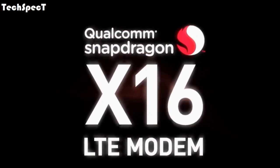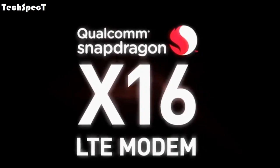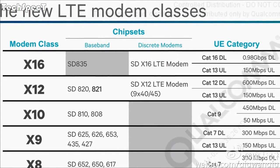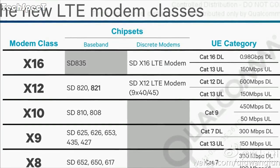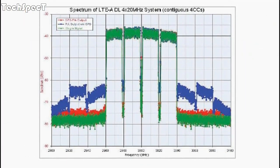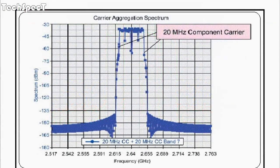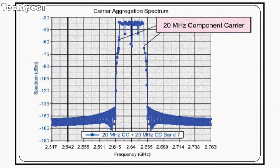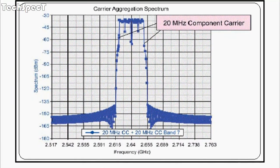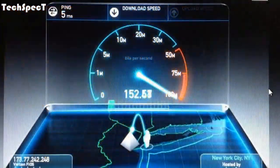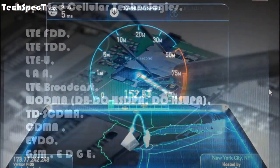Cellular Modem: Qualcomm Snapdragon X16 LTE Modem. LTE Category 16-4 Downlink, Category 13-4 Uplink. Downlink features: 4x20 MHz carrier aggregation and up to 256 QAM. Uplink features: Qualcomm Snapdragon Upload Plus, 2x20 MHz carrier aggregation up to 64 QAM. Peak download speed: 1 gigabit per second. Peak upload speed: 150 megabits per second.